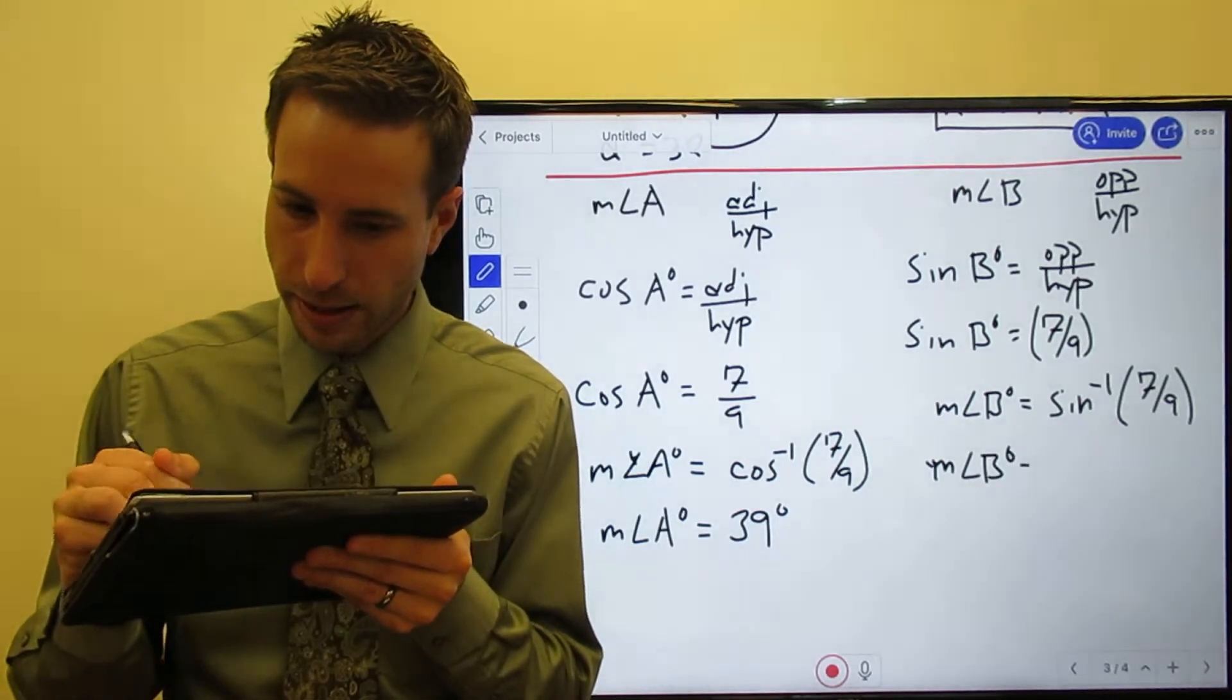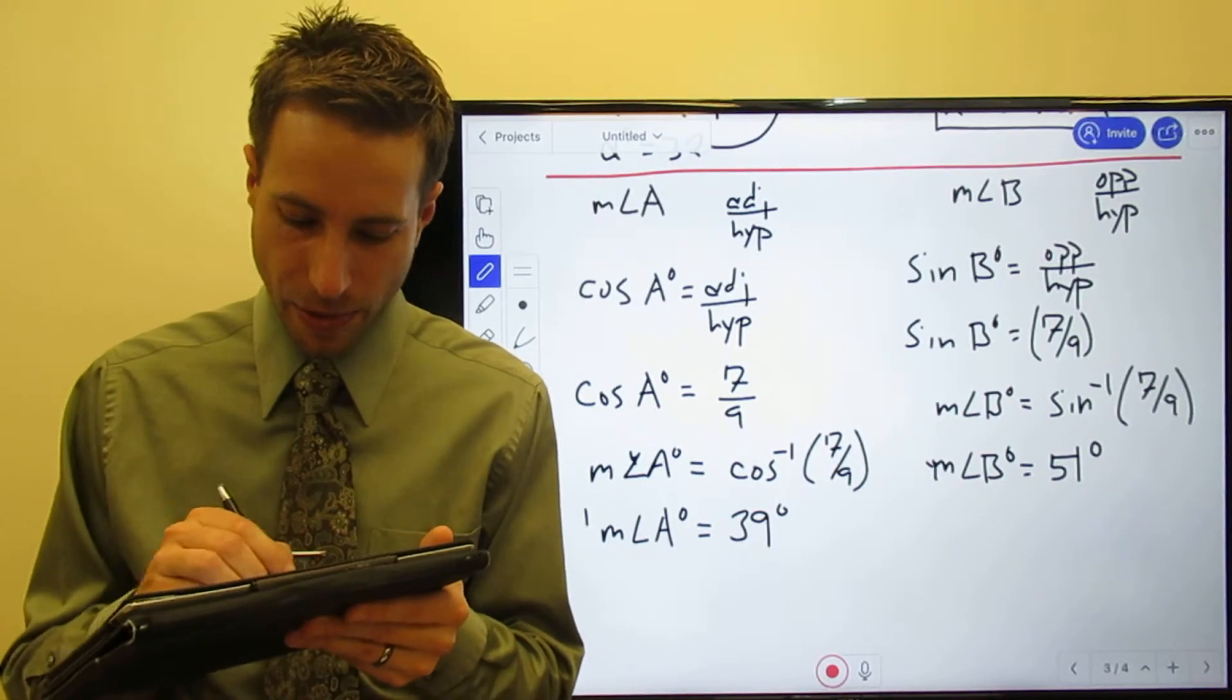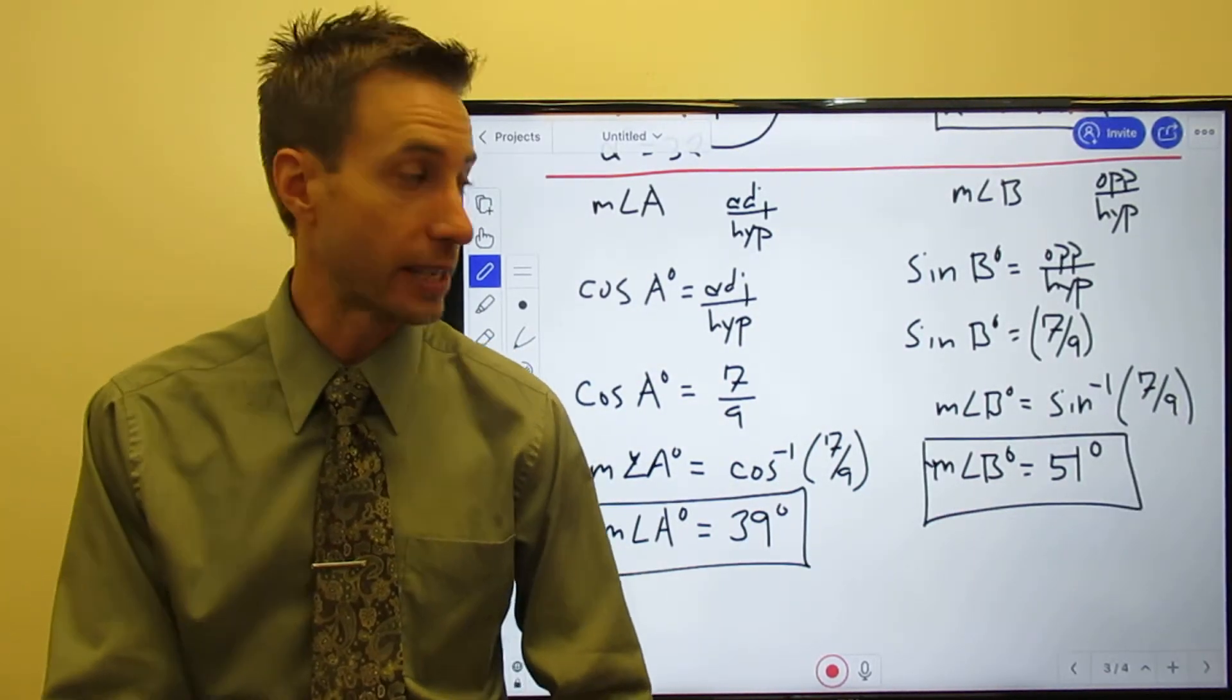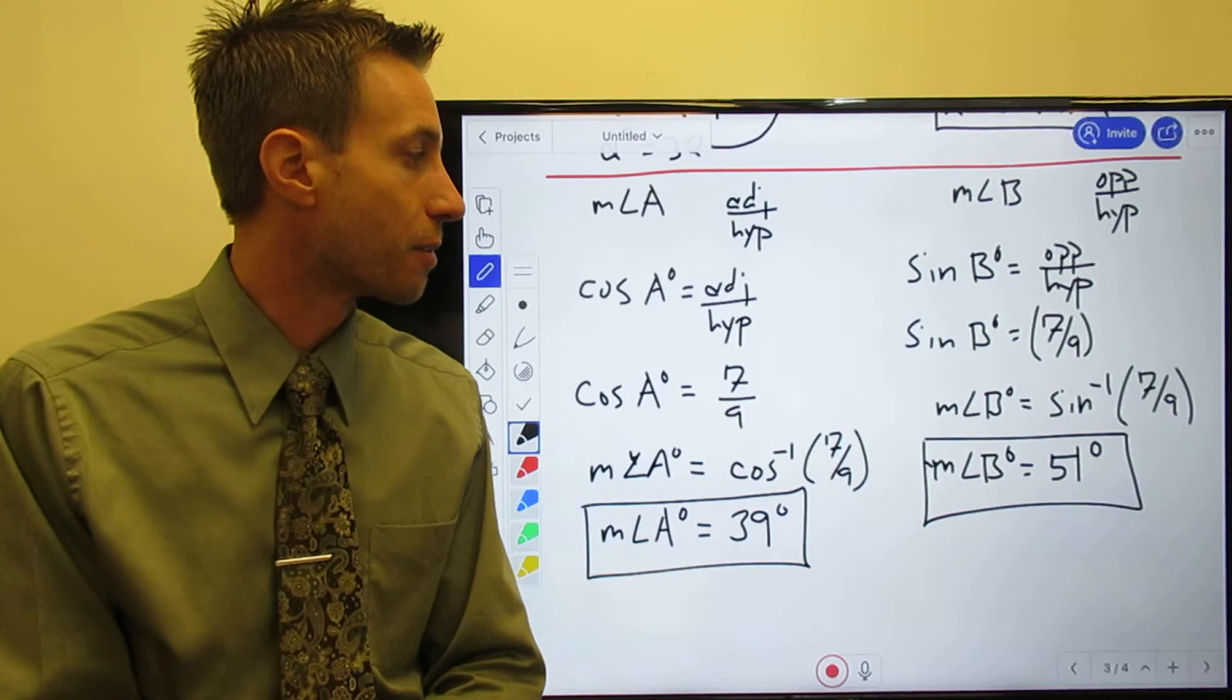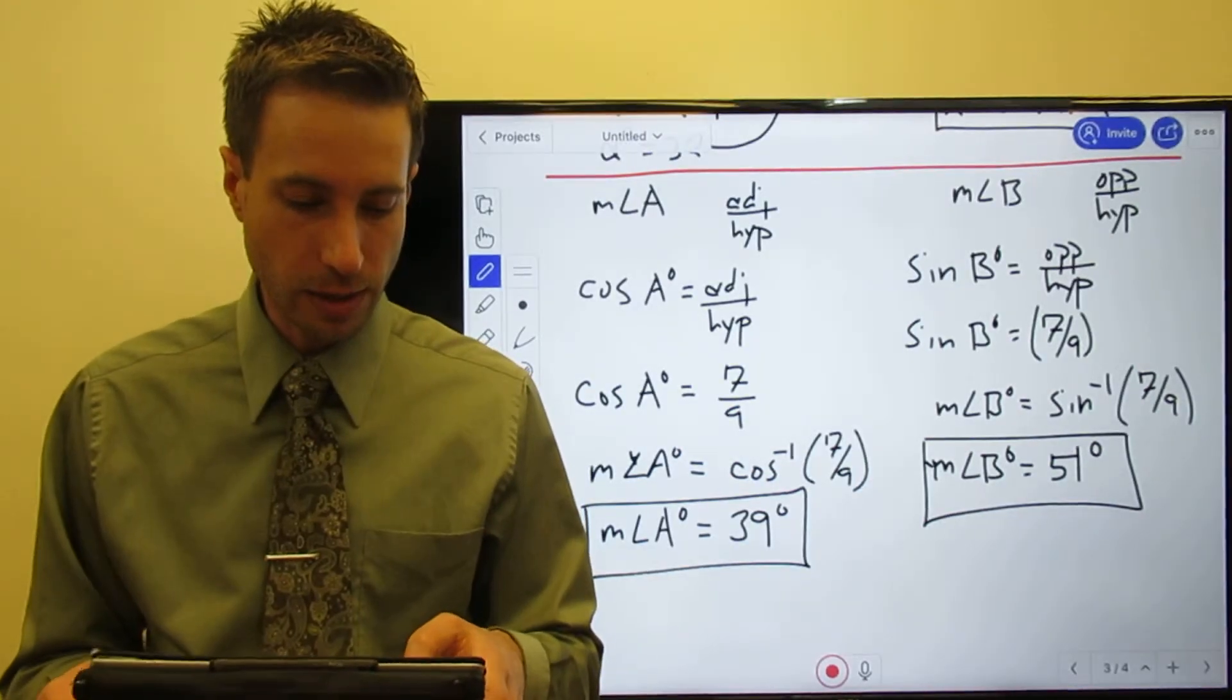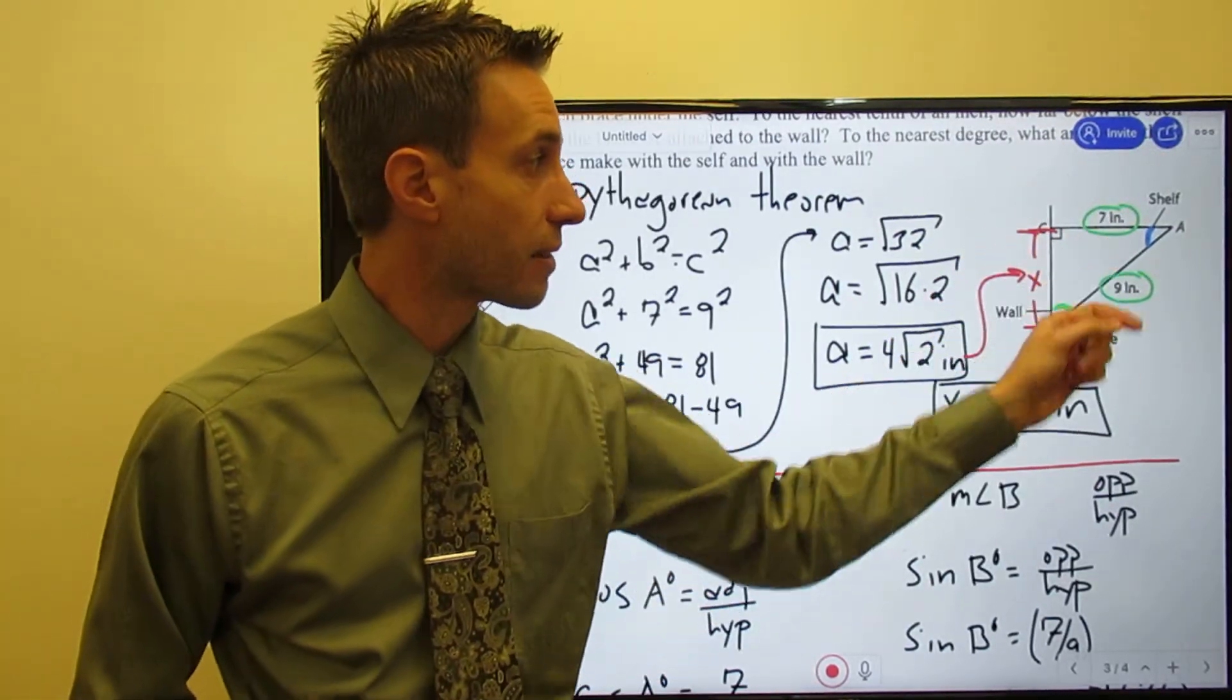...is 51 degrees. Now again, whether you did the triangle sum theorem, which is a perfectly great way to do it, or you went ahead and did the trig function, you're going to get the exact same answer - 51 degrees for the measure of angle B. And we've solved for everything that I wanted to know.